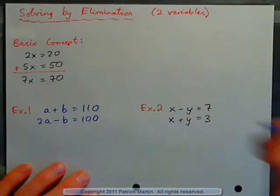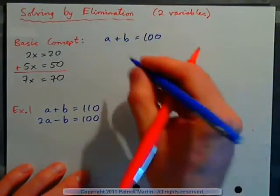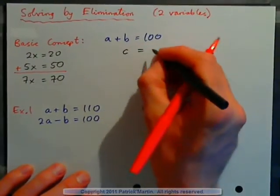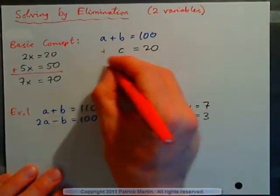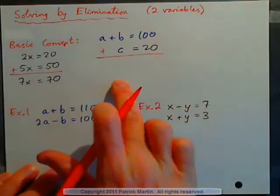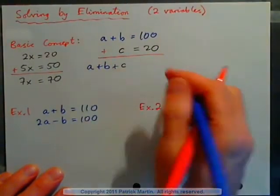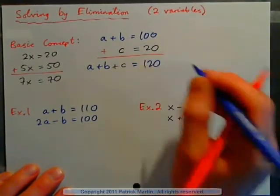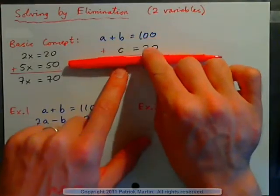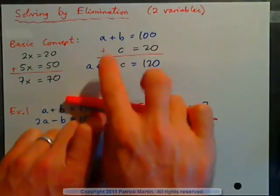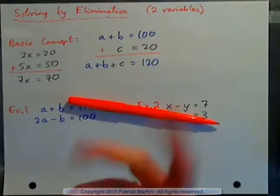Here's another example. I could have an equation that says apple plus banana equals 100 cents. Another equation might say a cherry equals 20 cents. The basic concept of elimination is that we can add equations together. Adding the left-hand sides and right-hand sides, I get apple plus banana plus cherry equals 100 plus 20, which is 120 cents. That makes sense.